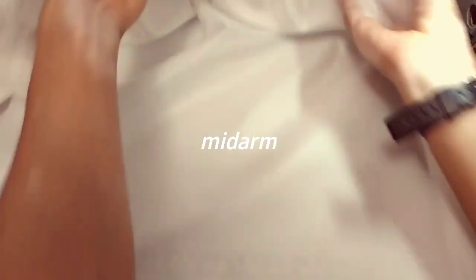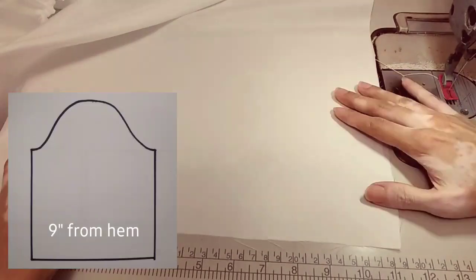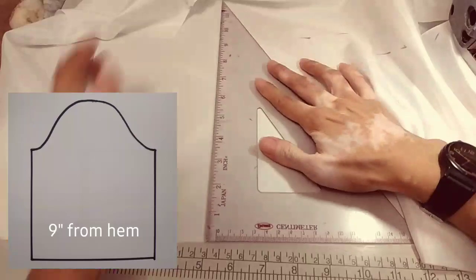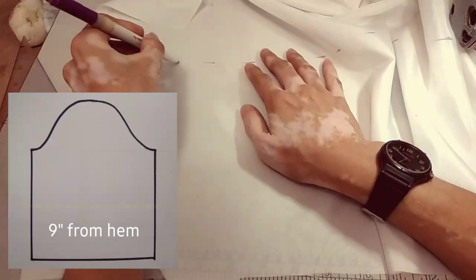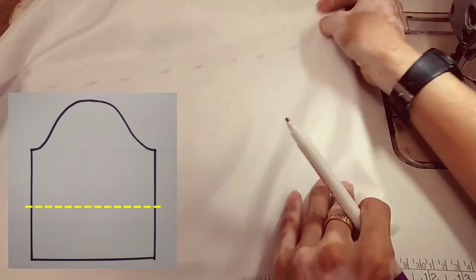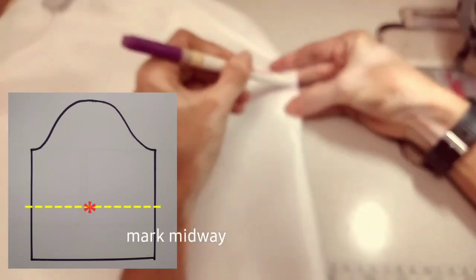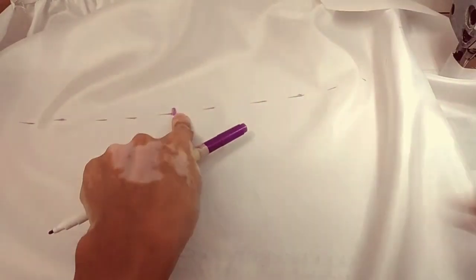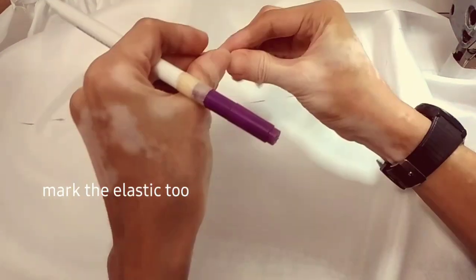We'll also add elastic at the mid arm or elbow, depending on your preference. 9 inches from the hem is where I'll mark and place the elastic. Mark midway on the sleeve as well as the mid part of the elastic.